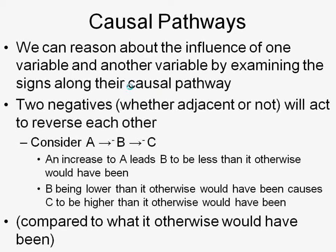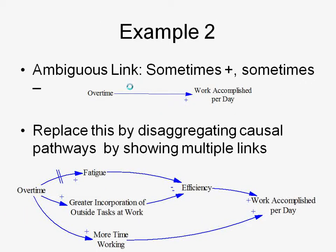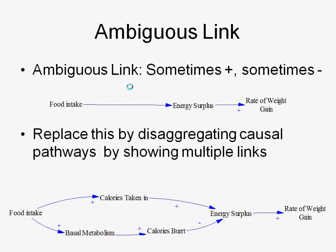When building these diagrams, you're sometimes confronted by the fact that A and B sometimes seem to have one polarity and sometimes the other. For example, working longer hours can make you more productive, but sometimes it makes you more fatigued so you make more mistakes and are actually less productive. How do you deal with these situations?